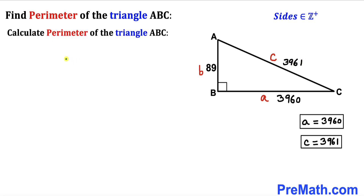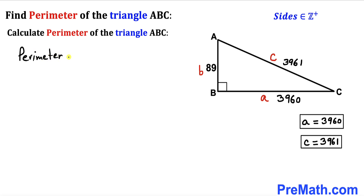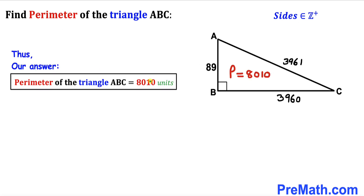Now for the final step, let's calculate the perimeter of right triangle ABC. We have found all side lengths: a = 3960, b = 89, and c = 3961. Adding them all together: 3960 + 89 + 3961 = 8010. So the perimeter of this triangle is 8010 units. Thanks for watching and please don't forget to subscribe to my channel for more exciting videos!